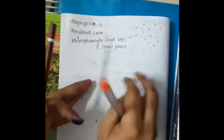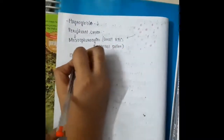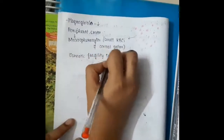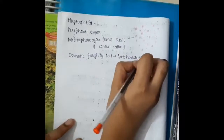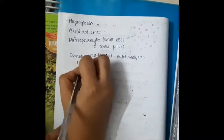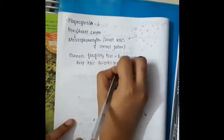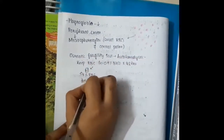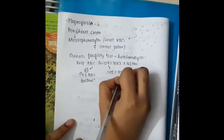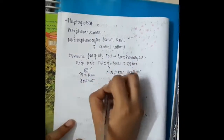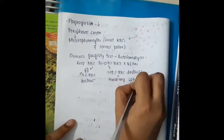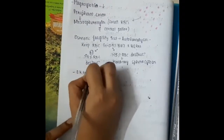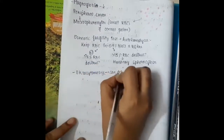An important diagnostic test is the osmotic fragility test, which shows autohemolysis. If RBCs are kept in 0.9% normal saline for 48 hours, normally less than 4% RBC destruction is seen. But in hereditary spherocytosis, more than 15% of RBCs are destroyed, demonstrating autohemolysis.